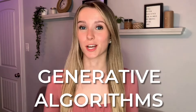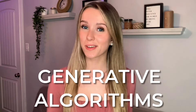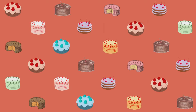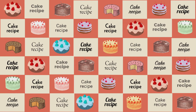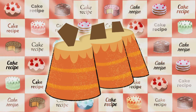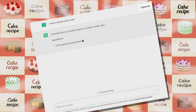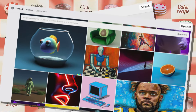Generative algorithms are recipes that are able to create new media and text. So the AI can look at 100 images of a cake or read 100 recipes about cakes and create a new image or recipe for a cake that doesn't even exist yet. Some examples would be ChatGPT or image generators, like DALL-E.